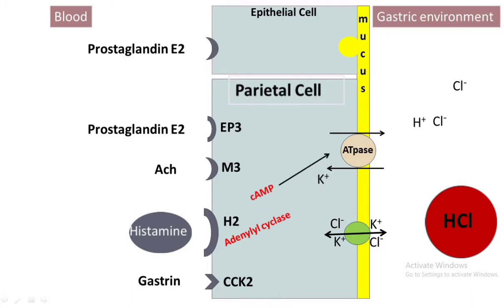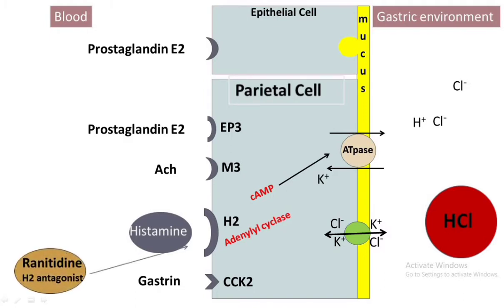When histamine binds with the H2 receptor, it activates adenylyl cyclase and induces an increase in cyclic AMP in the parietal cell. The secreted cyclic AMP activates protein kinase, which then activates the proton pump or hydrogen-potassium ATPase. When ranitidine is taken in the condition of gastritis or hypersecretion of hydrochloric acid, it inhibits the binding of histamine to the H2 receptor, thereby decreasing the gastric acid secretion in the lumen.